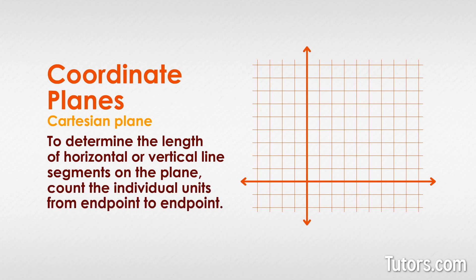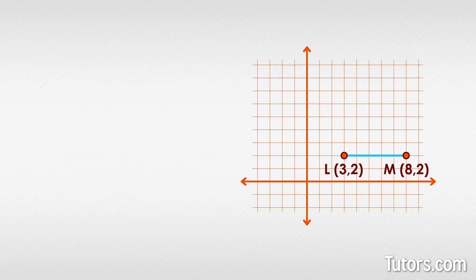To determine the length of line segment LM, we start at point L and count to our right five units, ending at point M. You can also subtract the x values: 8 minus 3 equals 5. For vertical lines, you would subtract y values. When working in or across quadrants two, three, and four, recall that subtracting a negative number really means adding a positive number.